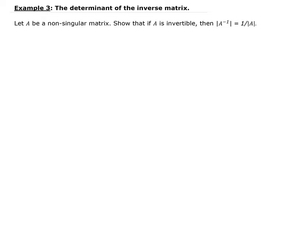In this example, we want to show that if A is invertible, which implies that A is a non-singular matrix, then the determinant of A inverse is equal to 1 over the determinant of A.